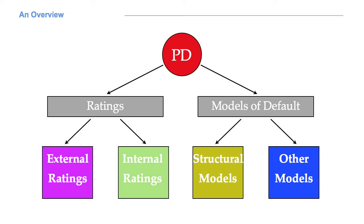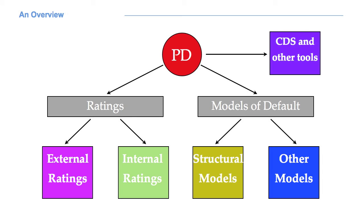Always speaking about probability of defaults, we will also deal with some tools like CDS and credit spreads, and we will see how we can use them to estimate the probability of default of a counterparty. These notions will be very useful every time we decide to invest in a bond or any other security which implies some credit risk.